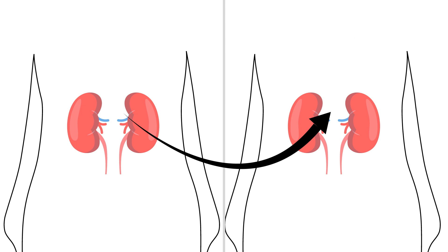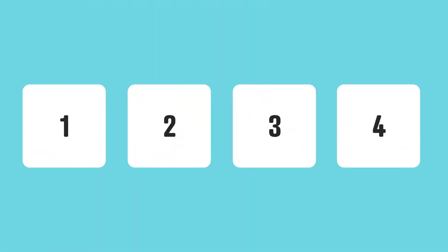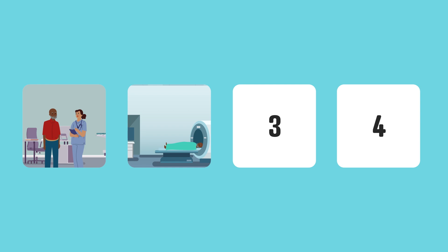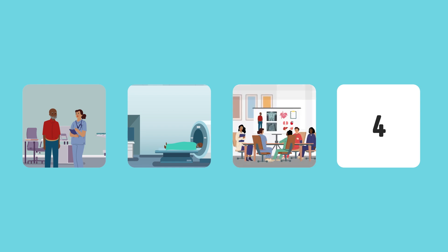Your kidney transplant evaluation is a four-step process. First, you will meet your transplant nephrologist, a doctor who specializes in advanced kidney disease, for a transplant consultation. Second, you will complete medical testing, which may include cardiac testing, imaging, lab work, and other tests that may be needed. Next, your case will be presented to the Kidney Transplant Multidisciplinary Selection Committee to review your medical condition and if you are a good candidate for a transplant. Finally, you will be listed for kidney transplant if you are an appropriate candidate.